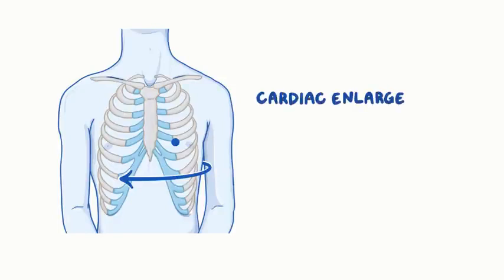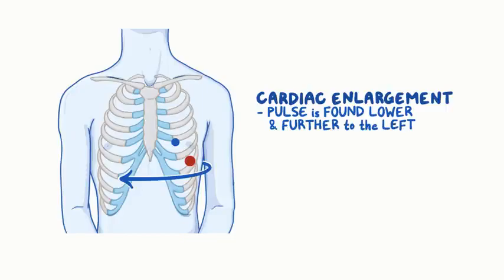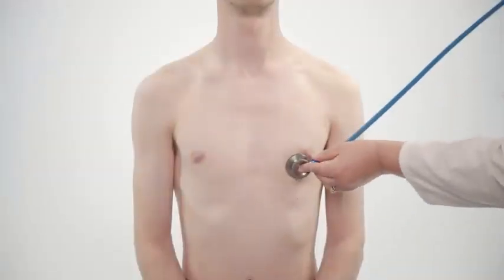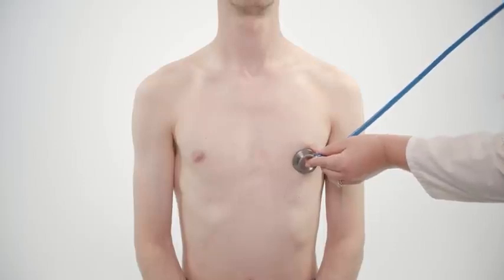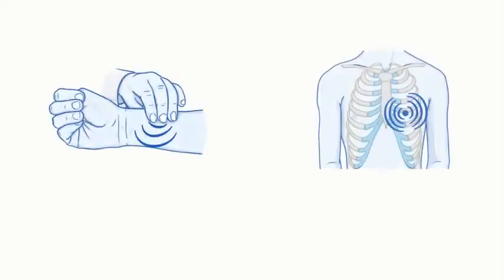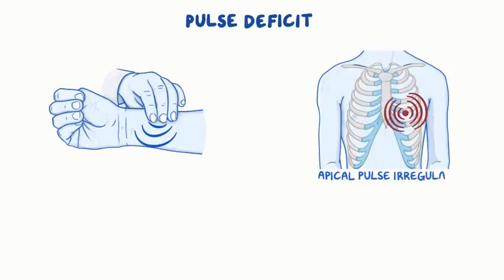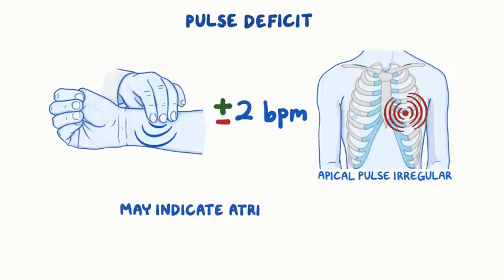In cases of cardiac enlargement, the pulse is often found lower and further to the left. Place your stethoscope against Fred's apical impulse. When you can hear Fred's heart sounds, begin counting his heartbeat, same as before. Now that we have a rough idea of both Fred's radial and apical pulses, we might have noticed a pulse deficit. A pulse deficit is when the apical pulse is irregular and there's a difference of more than 2 beats per minute between the radial pulse and the apical pulse. This may indicate atrial fibrillation.